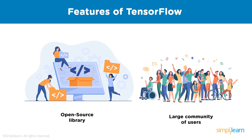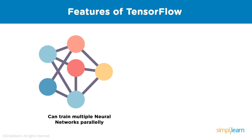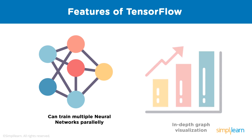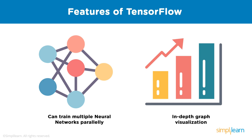Another feature of TensorFlow is that it has a large community of users. It was developed by Google, so it already has an amazing software engineering team working on stability improvements continuously. Using TensorFlow you can train multiple neural networks in parallel. TensorFlow offers pipelining, which means you can train multiple neural networks and multiple GPUs at the same time.